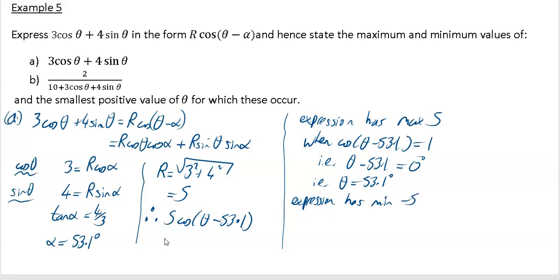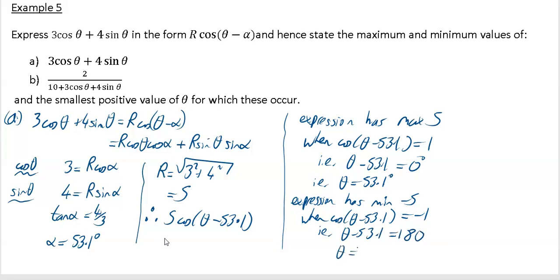The expression has a minimum of -5, and that happens when cos(θ - 53.1°) = -1. That happens when θ - 53.1° = 180°, which means θ = 180° + 53.1° = 233.1°.